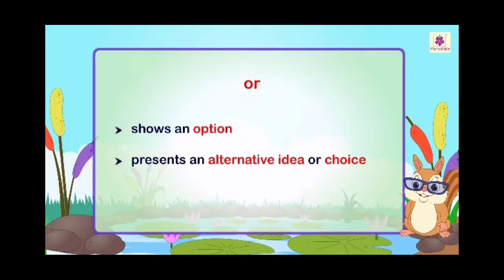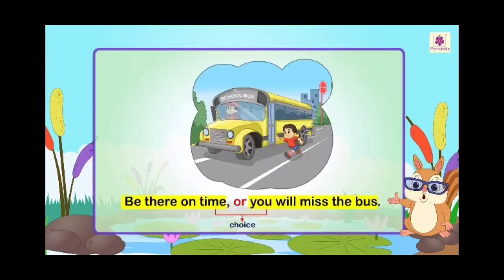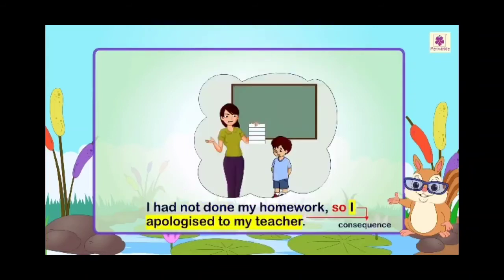'Or' shows an option — this or that. It presents an alternative idea or choice. For example: 'Be there on time, or you will miss the bus.' Here it shows a choice — either you be there on time, or you are going to miss the bus.